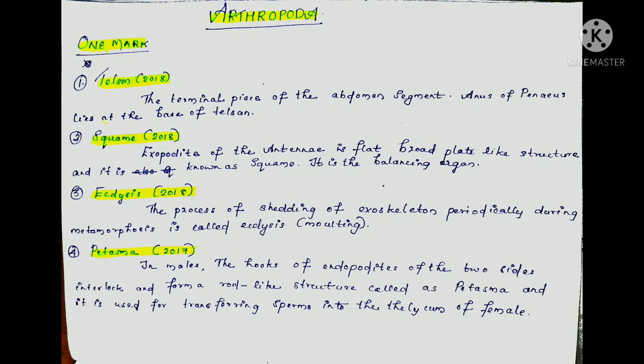The next question is: what is squama? The exopodite of the antenna is a flat, broad, plate-like structure and it is known as squama. It is a balancing organ. The antenna's flat, broad, plate-like structure is called squama, also known as a balancing organ.